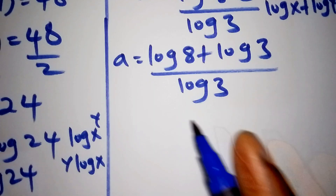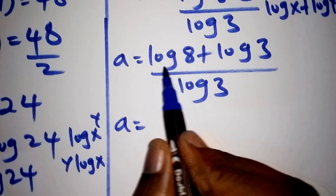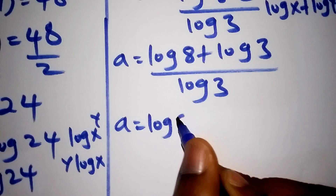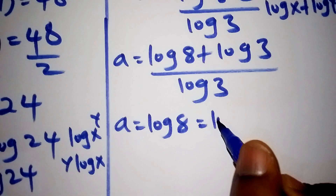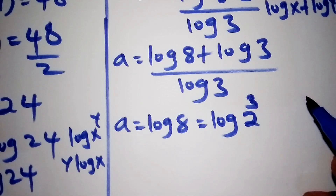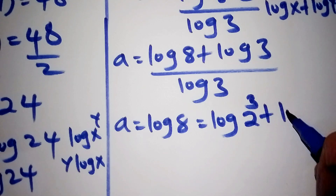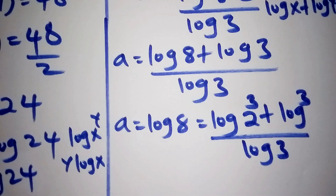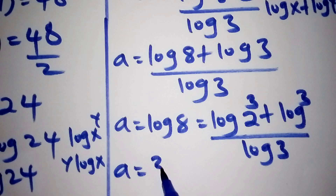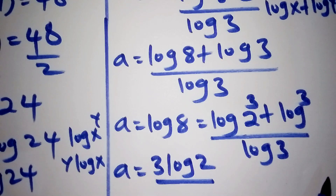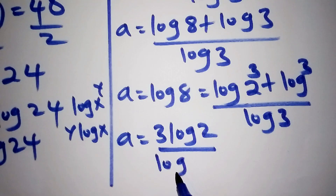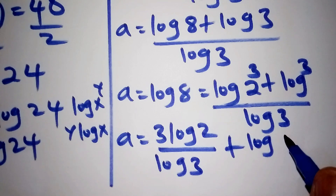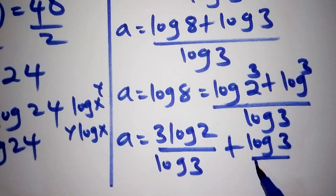So now proceeding, the log of 8 can also be written as the log of 2 to the power of 3. So a equals the log of 2 to the power of 3, plus the log of 3, all over the log of 3. The log of 2 to the power of 3 can be written as 3 times the log of 2. So a equals 3 times log of 2 all over log of 3, then plus log 3 divided by log of 3.